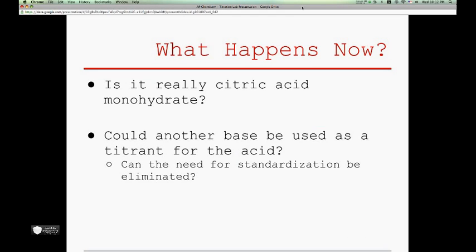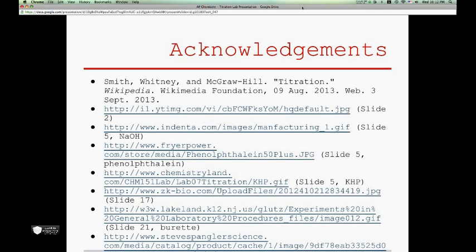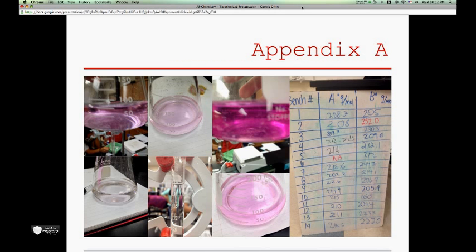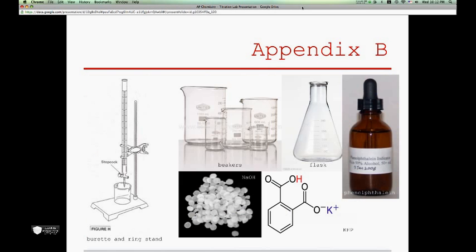Future plans for research would include testing whether or not the unknown acid really is citric acid. Additionally, the trials could be rerun using a different base, one that would remove the need for standardization. Here are acknowledgements, our Appendix A and our Appendix B, and thanks for watching.